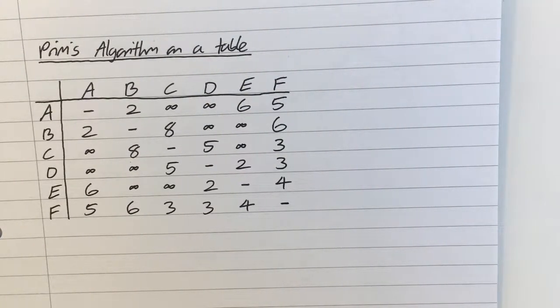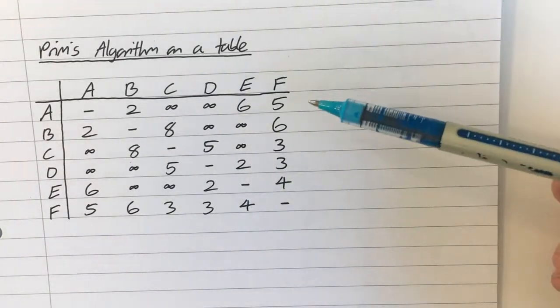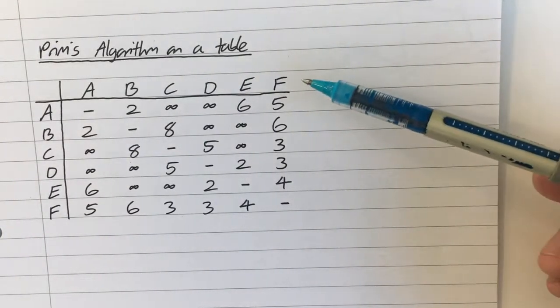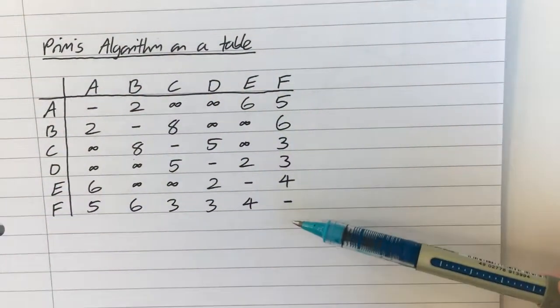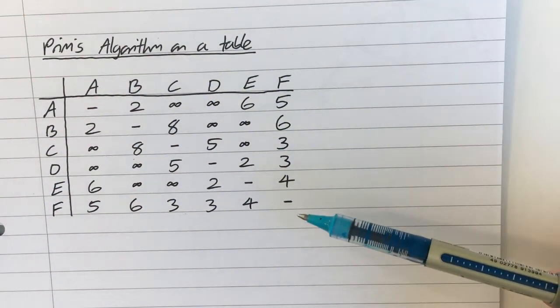So Prim's algorithm doesn't just have to apply to a network directly, it can apply to what's called a tabular form of a network. And this is essentially the same information that the network holds, but written as a table instead.